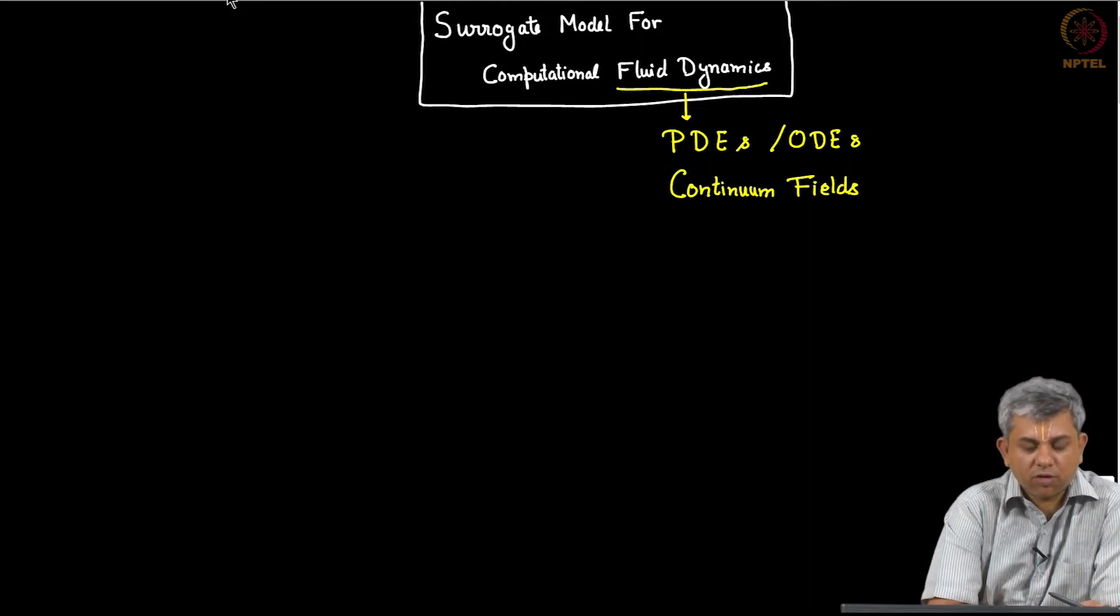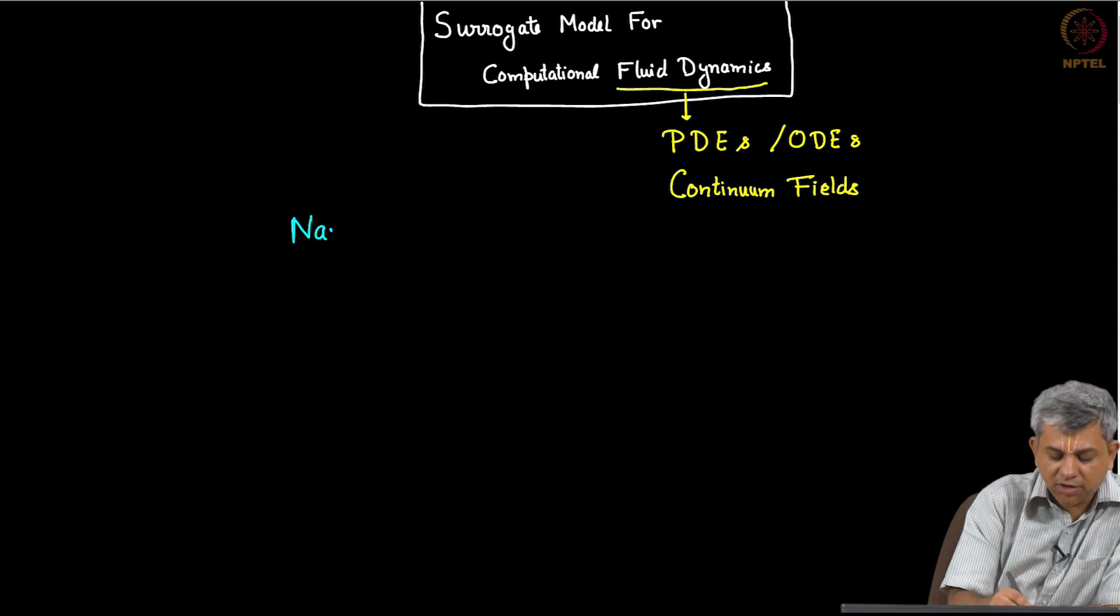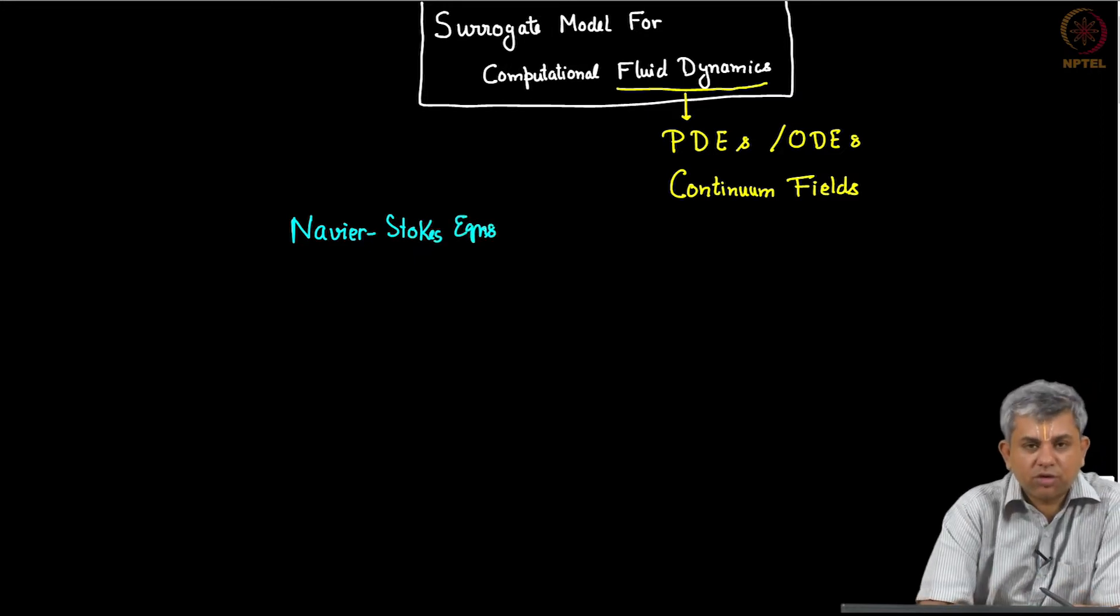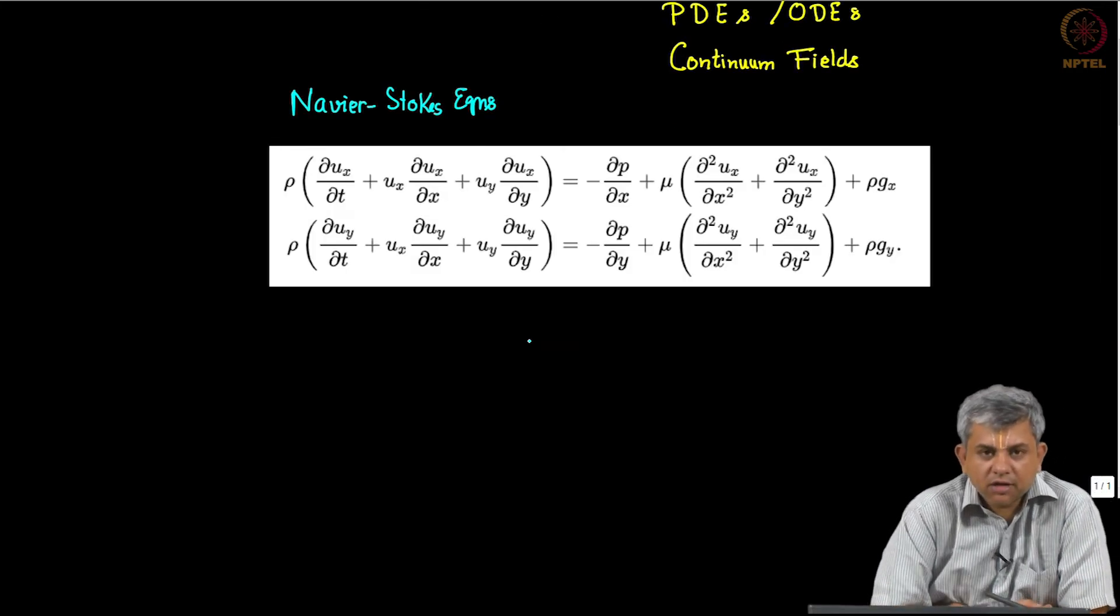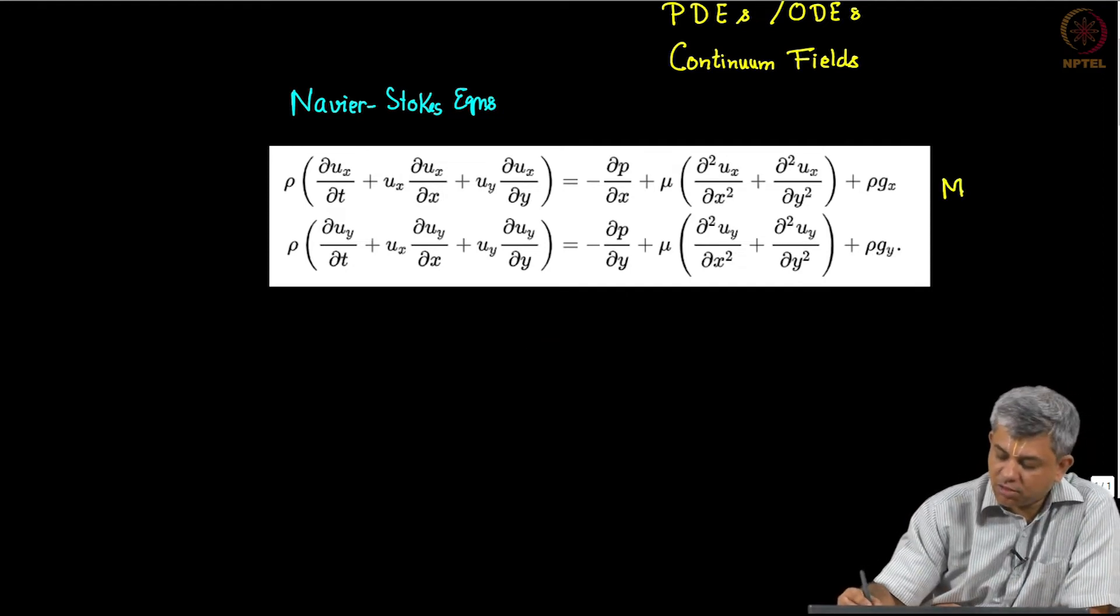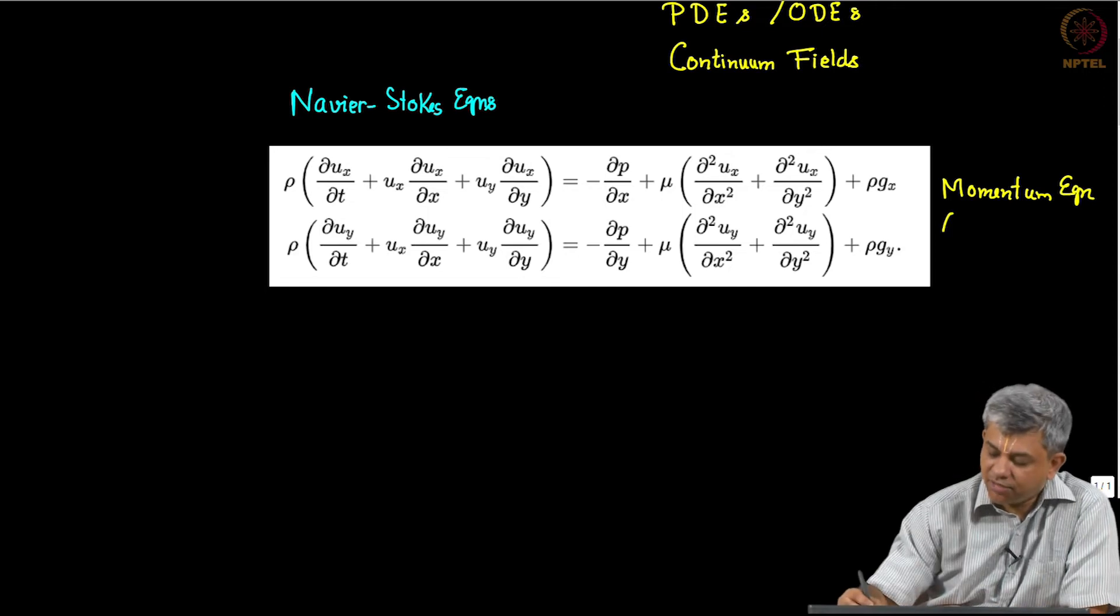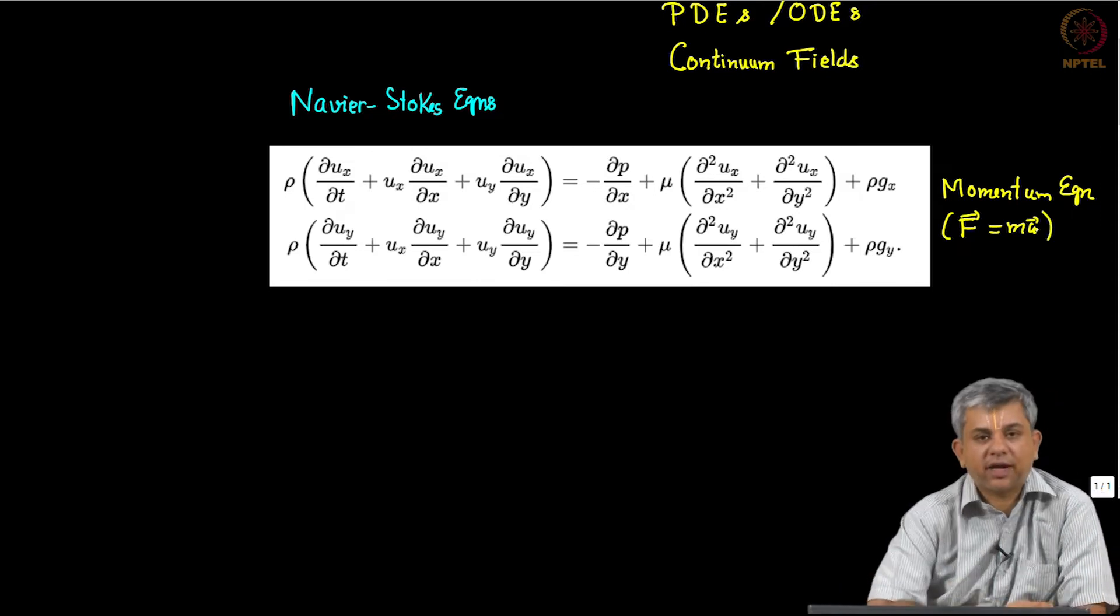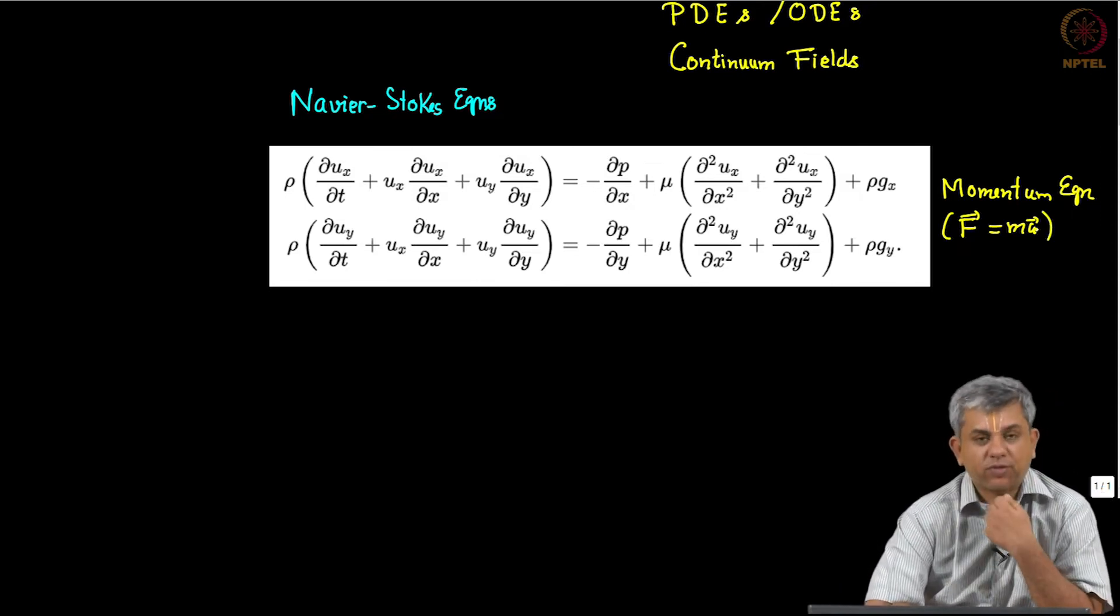So the problem is as follows: you have the governing partial differential equations—these are called the Navier-Stokes equations. Let me show those equations to you just so that you get a flavor of what they look like. These are the Navier-Stokes equations. They represent what is known as the momentum equation and they represent the fact that F = MA, that is Newton's second law, is applicable to a fluid also.